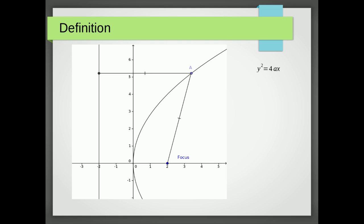We will use that definition to get the equation y² = 4ax. Notice that the distance between the focus and the vertex of the parabola is equal to the distance between the vertex and the directrix. That can be helpful when finding the equation of the line. Also notice that the vertex on this standard form is at the point (0, 0).